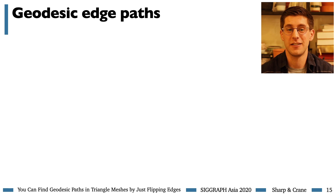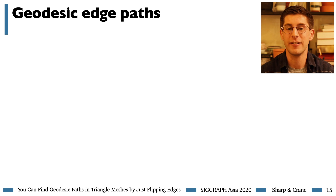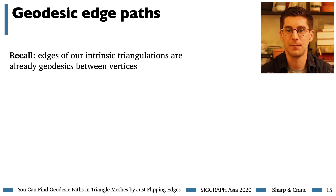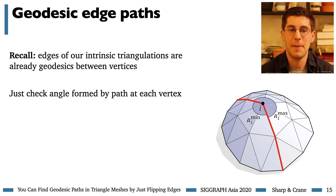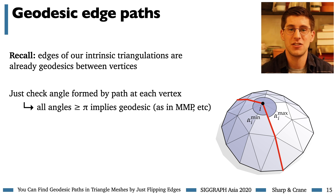The edges of intrinsic triangulations are already always geodesics, so to find geodesic edge paths we just need to worry about what happens at the vertices where edges meet. At any such vertex, if the swept angles on either side of the path are both greater than pi, then the path is a geodesic at that vertex. This definition is consistent with past algorithms like MMP.